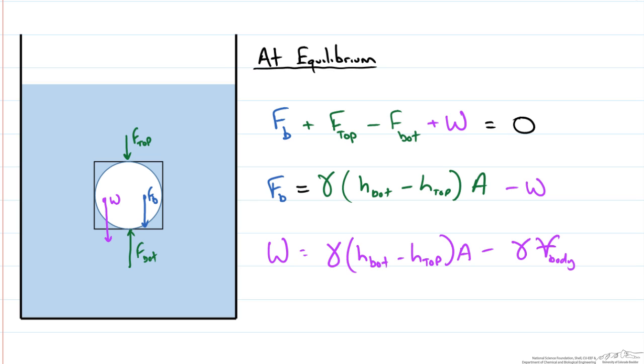And without doing so yet you should see that this term and this term are exactly the same, and since we are subtracting it out we are left with that the buoyant force F_B is equal to the specific weight of our fluid times the volume of our body.